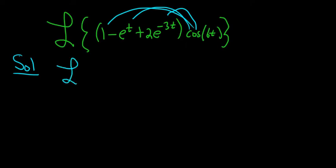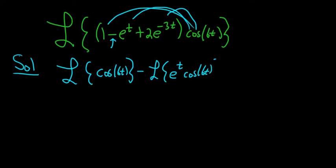So first we have the Laplace of 1 times cosine, that's just going to be cosine 6t, then minus Laplace of e to the t times cosine of 6t, and then plus, and we can pull the 2 out, so 2 Laplace transform of e to the negative 3t cosine of 6t.